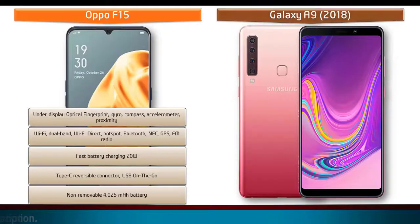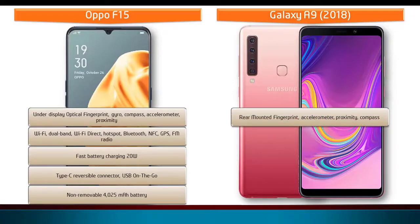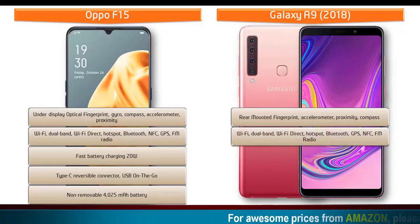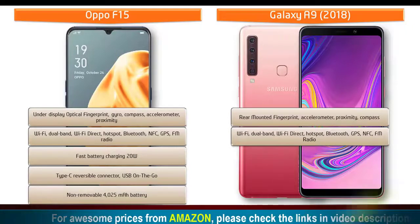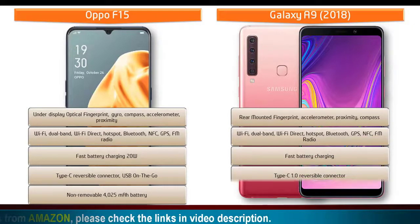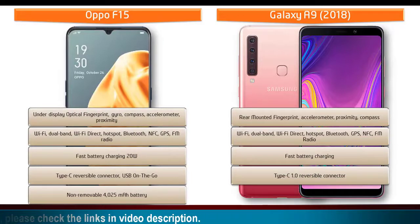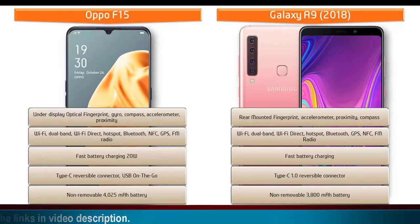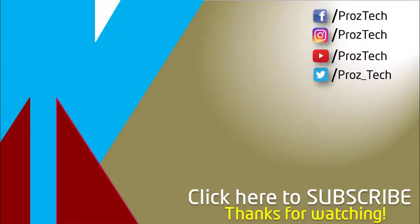Galaxy A9 features a rear-placed fingerprint scanner along with accelerometer, proximity, compass, and gyro sensors. Connectivity includes Wi-Fi dual band, Wi-Fi Direct, hotspot, Bluetooth, GPS, NFC, FM radio, Type-C reversible connector, and fast battery charging. The phone is powered by a 3800 mAh non-removable battery. That was the quick comparison of both smartphones.